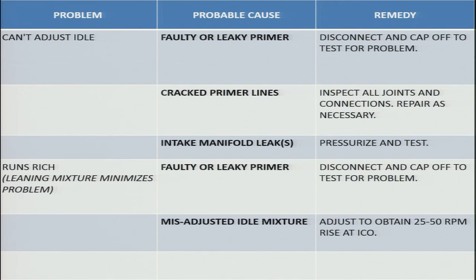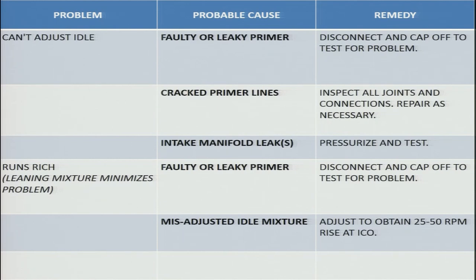To verify correct idle mixture adjustment: gradually move the mixture control lever from full rich to the idle cutoff position and observe the RPM rise. If we obtain an RPM rise of 25 to 50 RPM during this movement, it indicates the idle mixture is adjusted properly. Adjust the idle mixture as per manufacturer steps to obtain a 25 to 50 RPM rise.